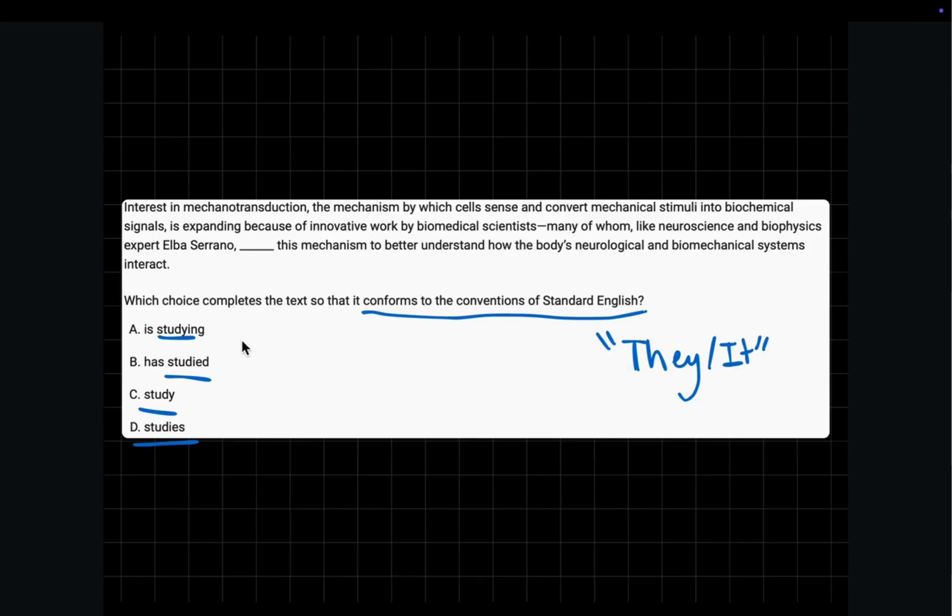Choice A. Do you say it is studying or do you say they is studying? You say it is studying. They is studying just sounds completely wrong. So when you use it, it means it is singular. When you use they, then it is plural. Choice B. It has studied or they has studied? It has studied. So singular again.